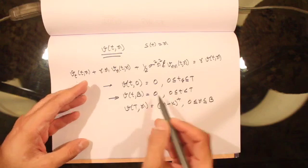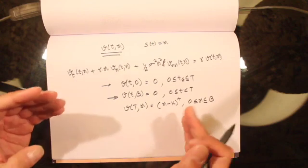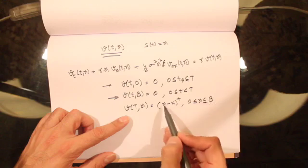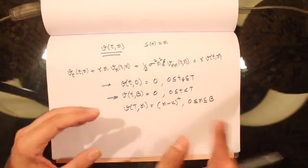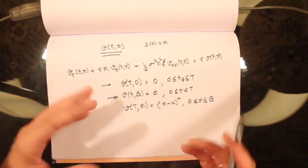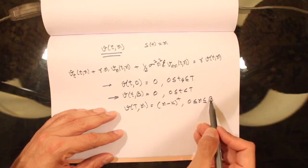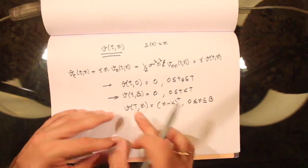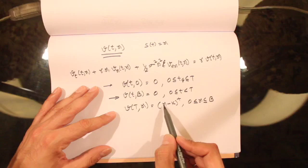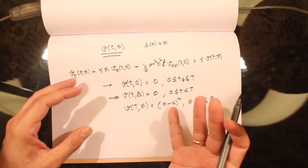At expiration time T, we allow the stock to reach the barrier, because if it reaches the barrier at expiration it doesn't have time to get knocked out. So this condition is valid for 0 ≤ x ≤ B. Even if x equals B at time T, it will not be knocked out, and the payoff is (x − K)+, which is the standard call option payoff.